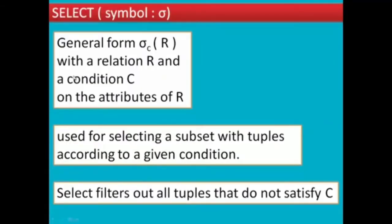SELECT symbol is sigma. Alpha of C of R, where R is the relation and C is the condition on the attributes. It is used for selecting a subset of tuples according to the given conditions. SELECT filters out all the tuples that do not satisfy the condition C.